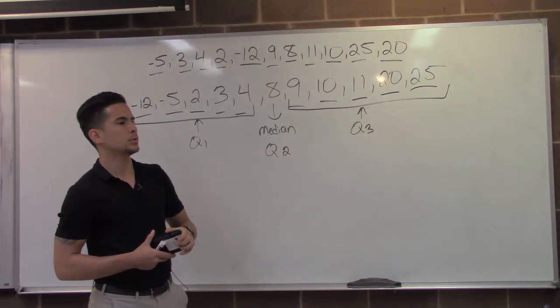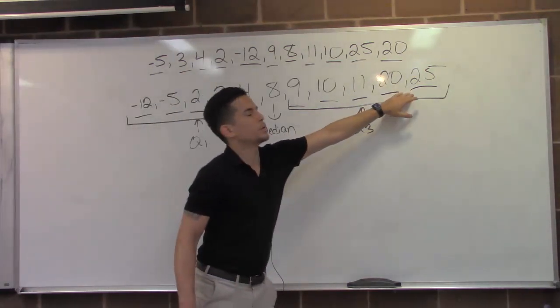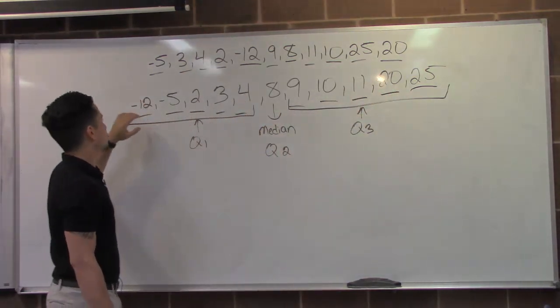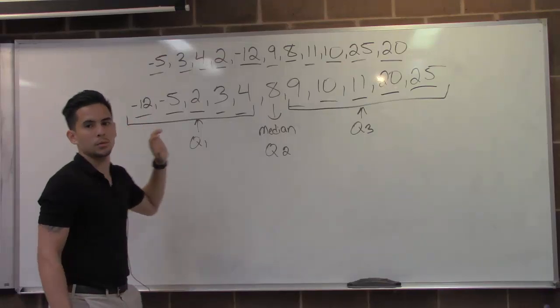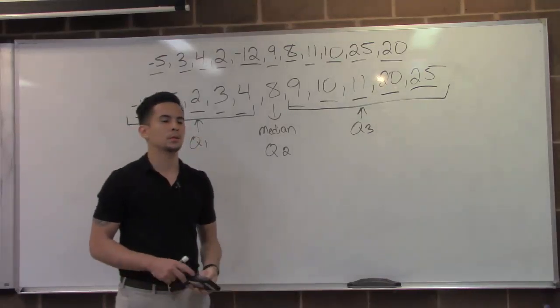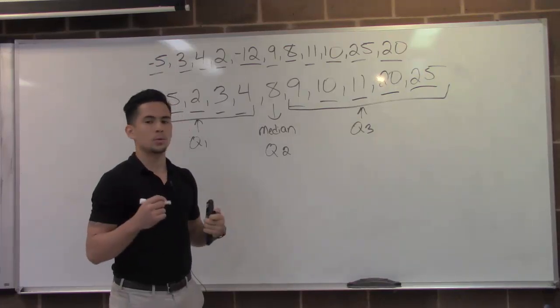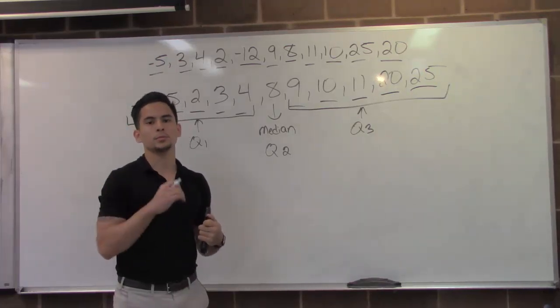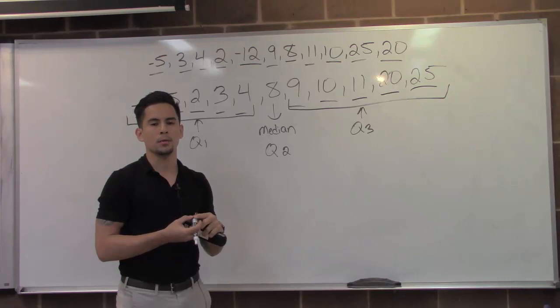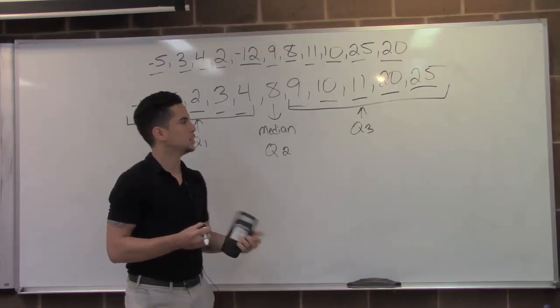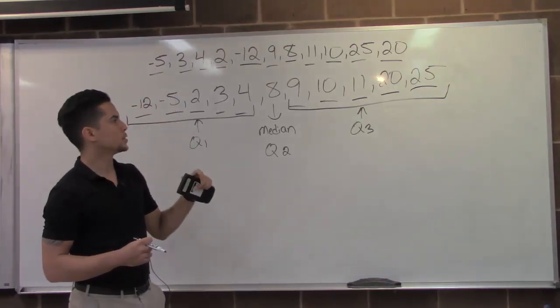From the five number summary, we can't determine that twenty-five and negative twelve is our minimum and maximum. We need to first find our interquartile range to help us determine whether or not that would be our minimum or maximum.